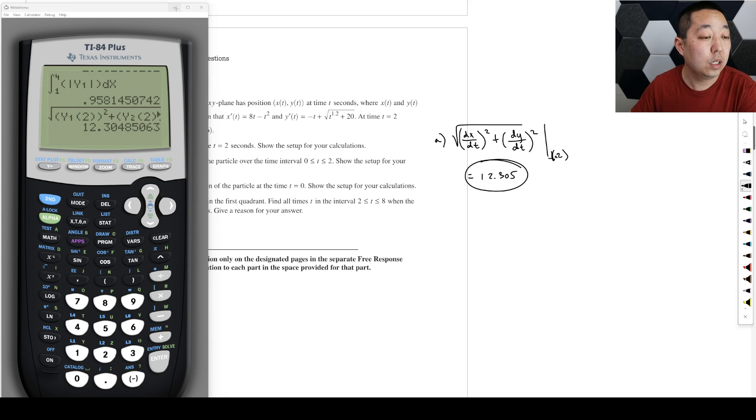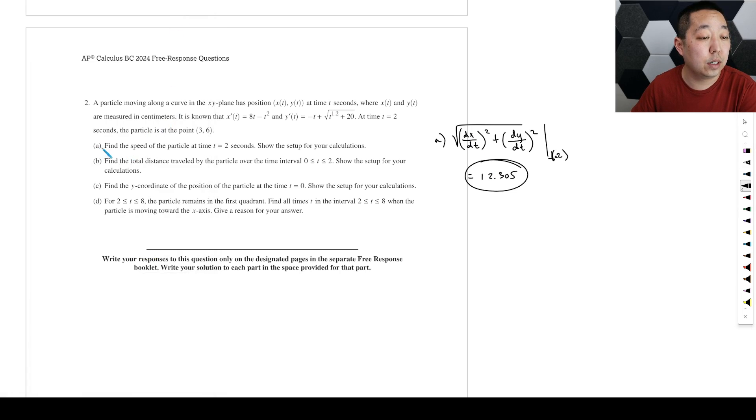Next part. Find the total distance traveled by the particle, show the setup for your calculation. I don't know what that means, but maybe if you wanted to be a little bit careful on that setup. So for part a, I might do square root of x prime of 2 squared plus y prime of 2 squared, just to show what you did on the calculator if it's not super obvious.